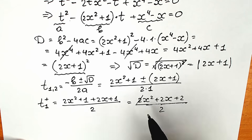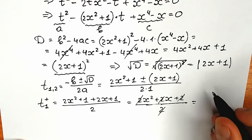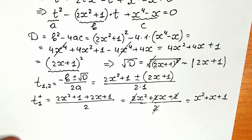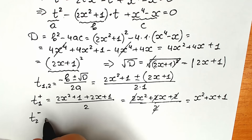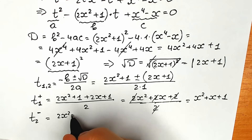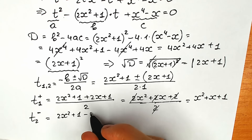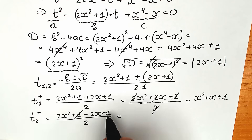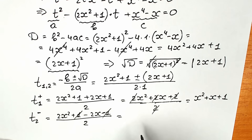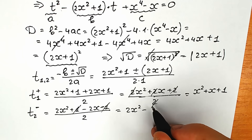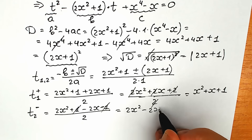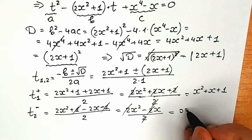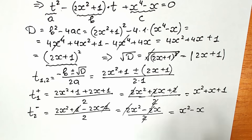For t₂ with the minus sign: (2x² + 1 − 2x − 1) / 2 = (2x² − 2x) / 2 = x² − x. So t₂ = x² − x.